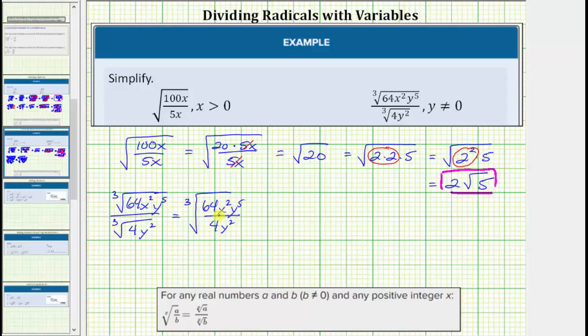In this form, we will now simplify the fraction and then simplify the resulting cube root. So we have the cube root of 64 divided by 4 is equal to 16. Then we have x squared. Then we have y to the fifth divided by y to the second.